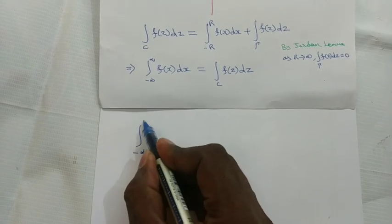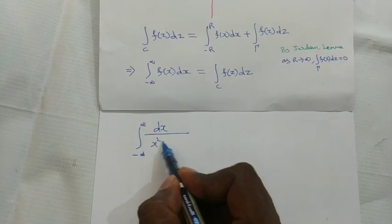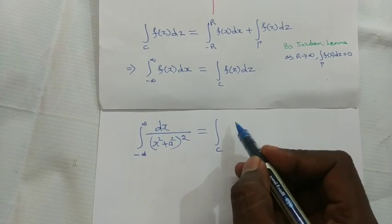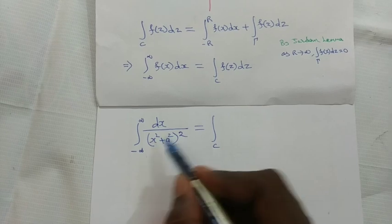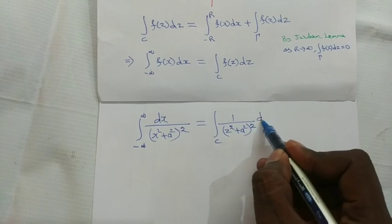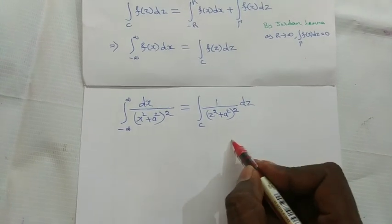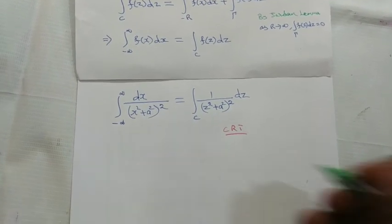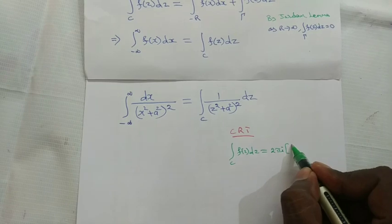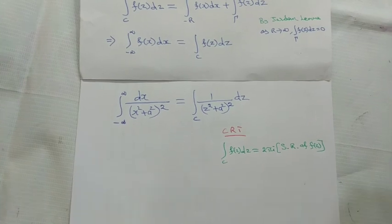So the integral from 0 to infinity of dx/(x² + a²)² equals the integral over C of f(z) dz, where f(z) = 1/(z² + a²)². Now applying the Cauchy Residue Theorem: the integral over C of f(z) dz equals 2πi times the sum of the residues of f(z). This is equation 1.